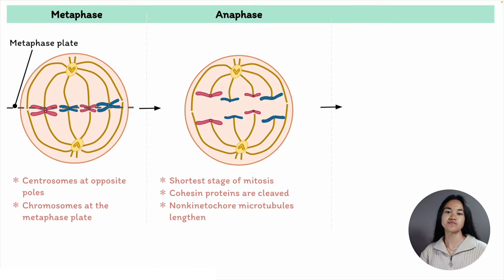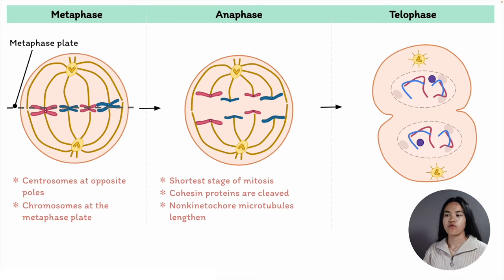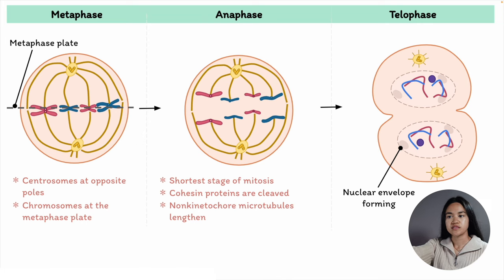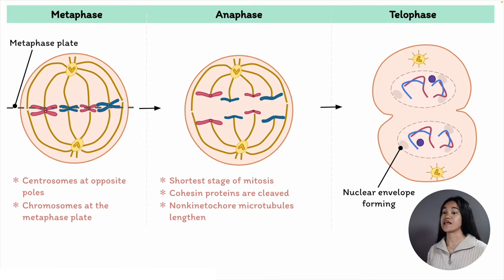Telophase: the cell is nearly done dividing, so it rebuilds the structures that disappeared at the start and breaks down the spindle. The two daughter nuclei form — one for each set of chromosomes — and the nuclear envelope reappears. The nuclear proteins and nuclear lamins that were phosphorylated during prometaphase are now dephosphorylated, enabling them to reassemble the nuclear envelope and lamina. The chromosomes begin to decondense and the mitotic spindle is broken down. Mitosis is now complete.